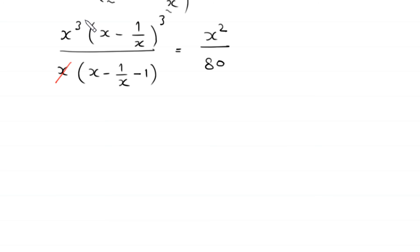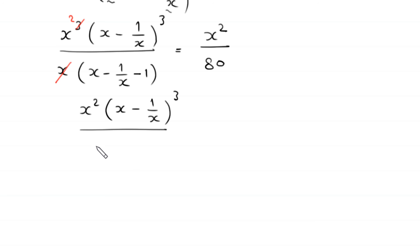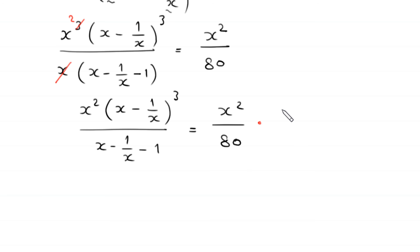Now this x will be cancelled out, leaving x squared times (x - 1/x)³ divided by (x - 1/x - 1), equal to x² over 80. Next, we multiply both sides by 1 over x squared. On the left-hand side this x squared cancels, and the right-hand side x squared also cancels.